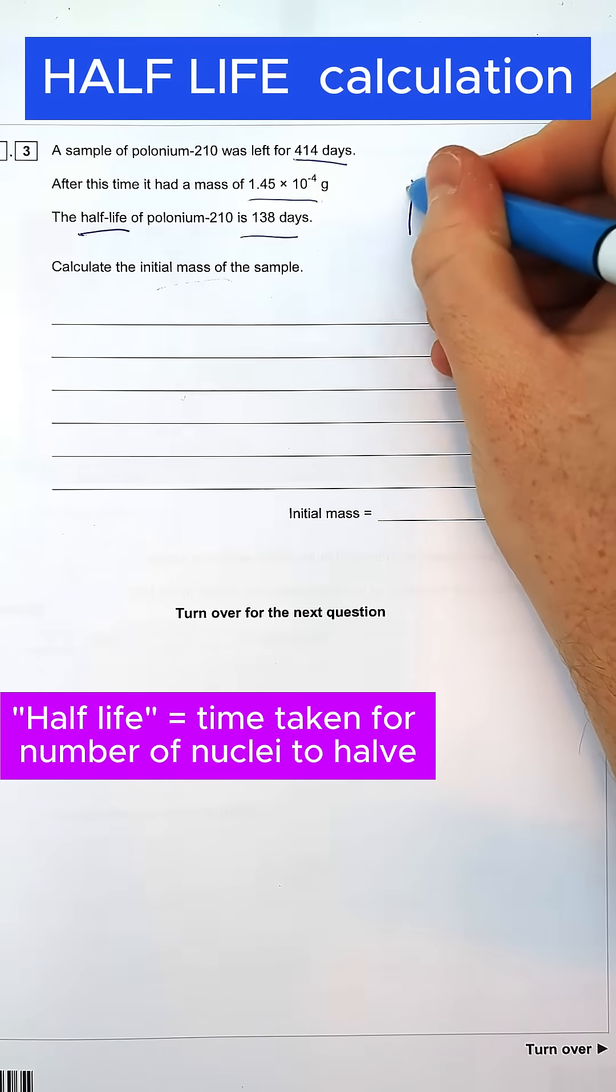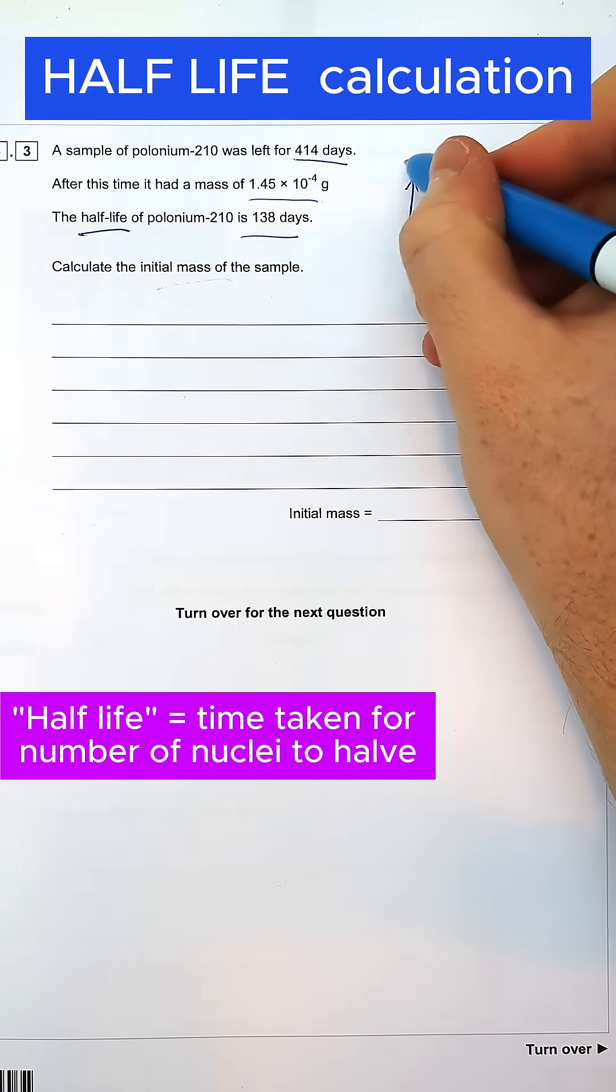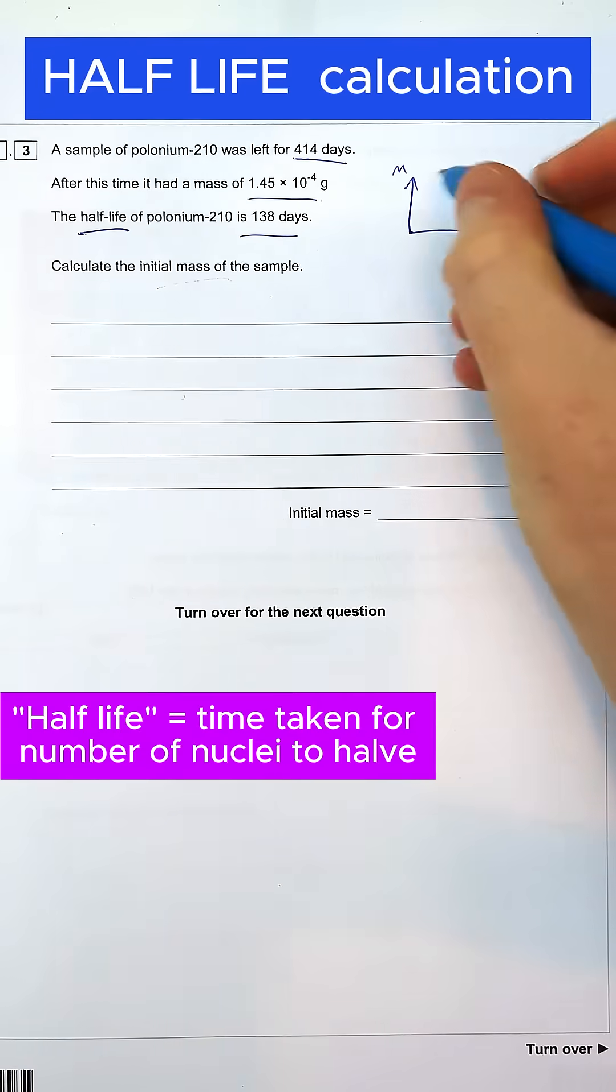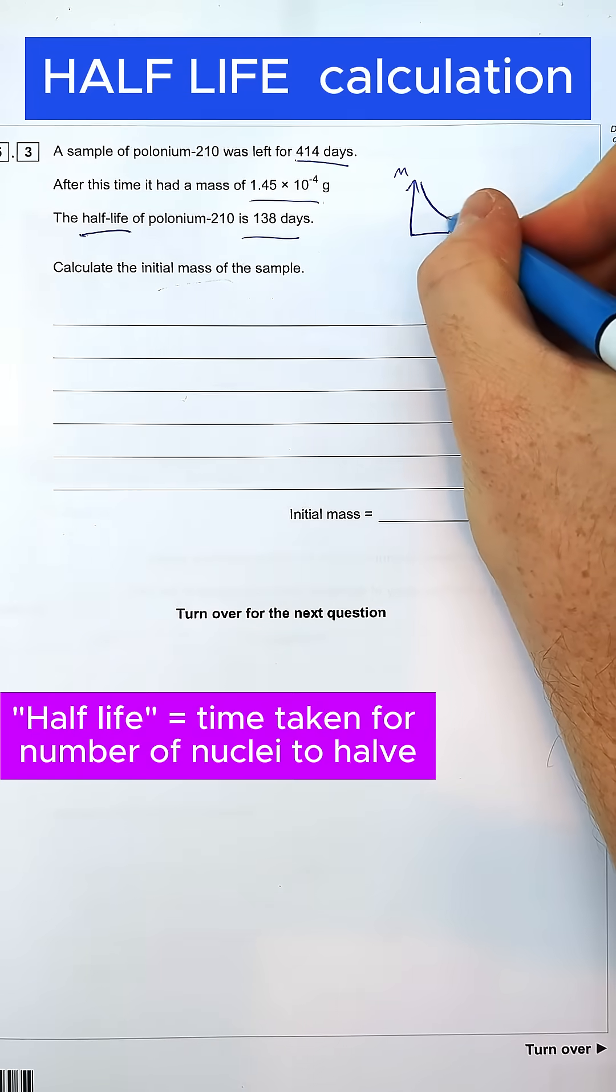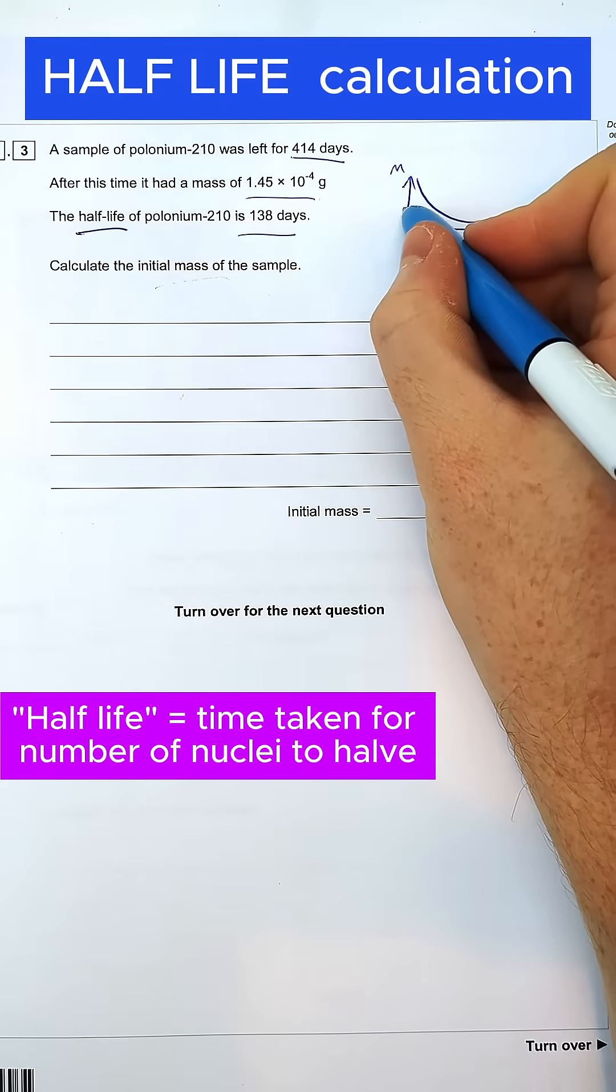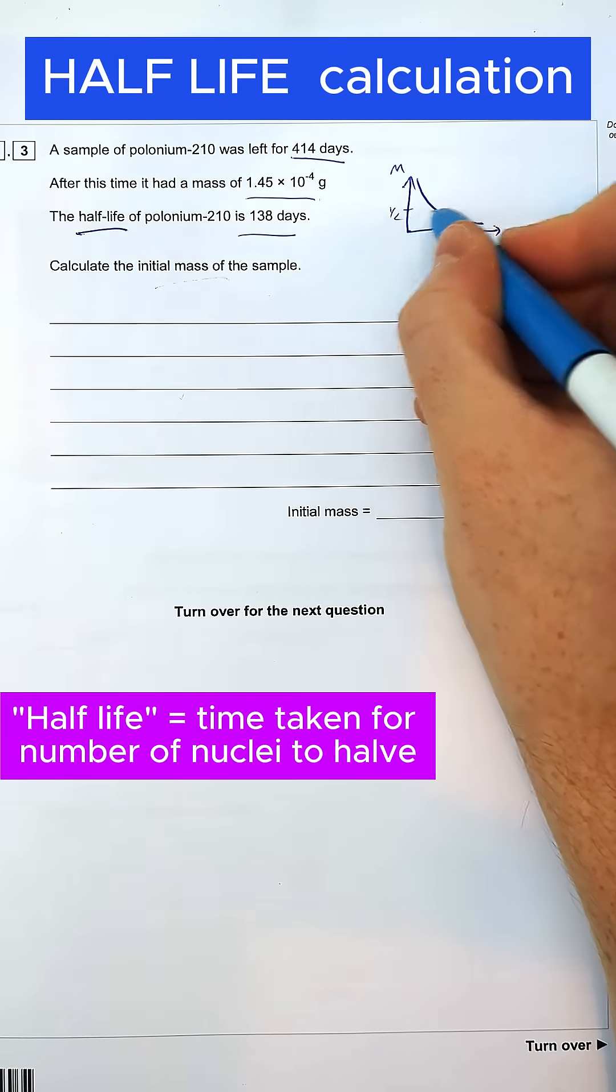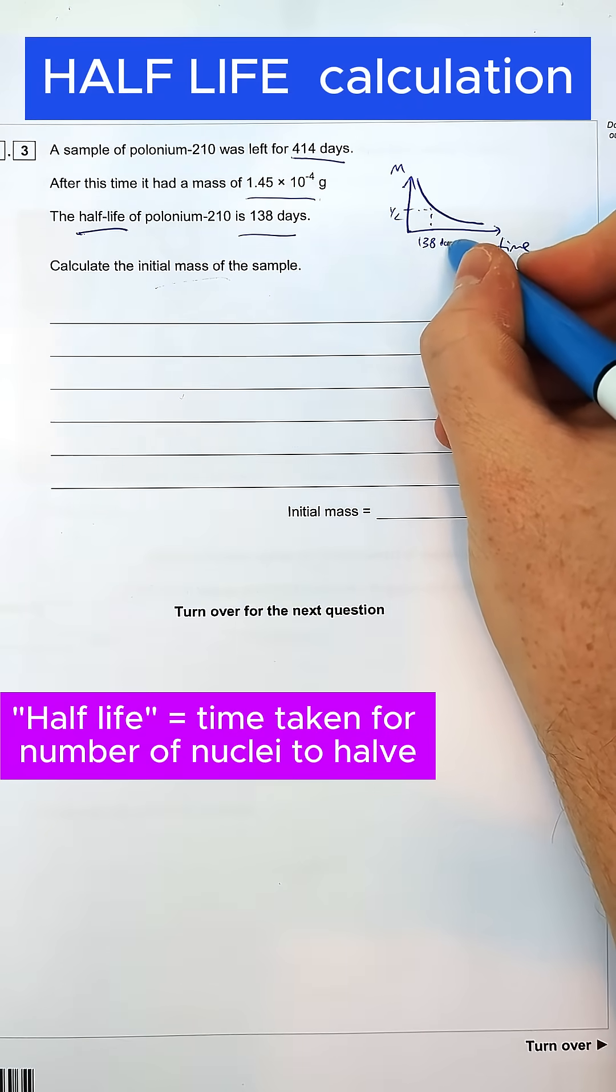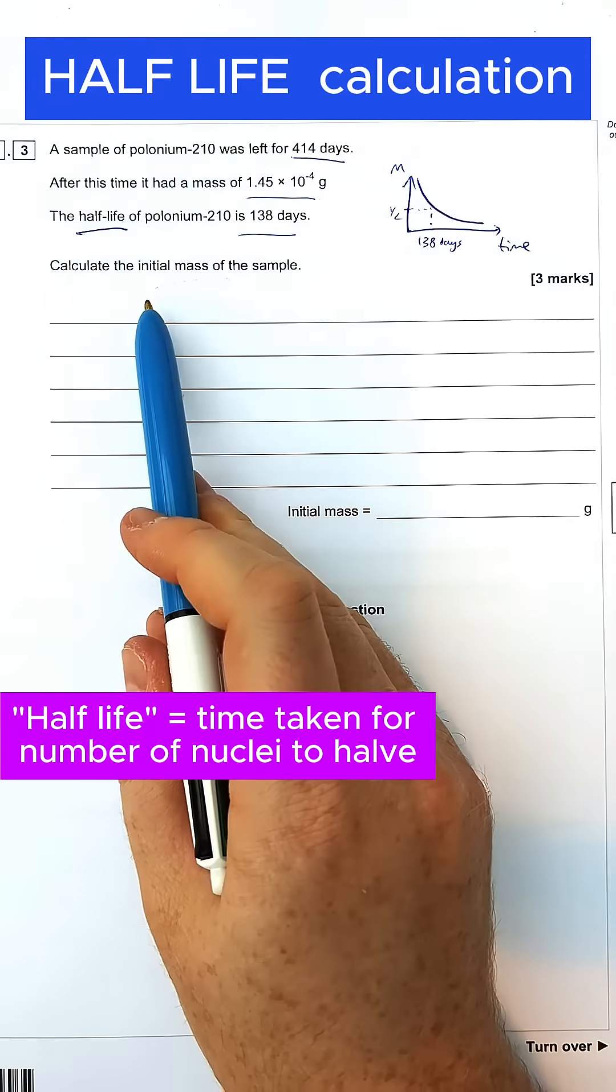To go about doing this question, it's always useful to recap the basics. The idea is that the mass of the substance or the number of nuclei goes down over time. It goes down like this. Now for the time taken for it to go down to half, we can use it to find the half-life. So in this case, it's 138 days. Always useful when answering questions like this.